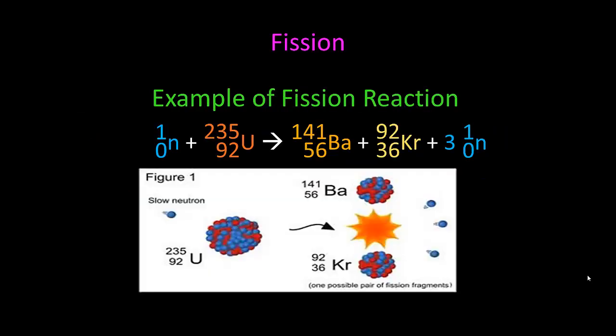So here's an example that we just gave. This neutron right here is captured by a uranium-235. It becomes very unstable, and it will split off into two other smaller elements, a barium-141 and a krypton-92 isotope, and it will give off three neutrons.